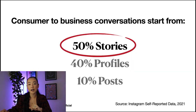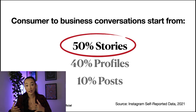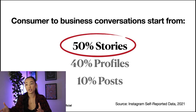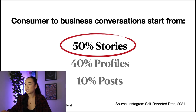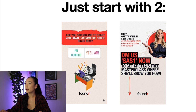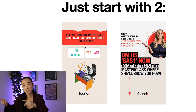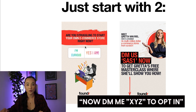The reason stories are so powerful: consumer-to-business conversations start 50% from stories, 40% from profiles, and 10% from posts — shared by Instagram with beta participants back in June 2021. As a bonus tip: if you do two stories, you'll get a much higher opt-in rate. Do a first story asking a question like 'do you have this problem?' with a poll, then in the second story say 'DM me this specific word' — that's where you opt people in.